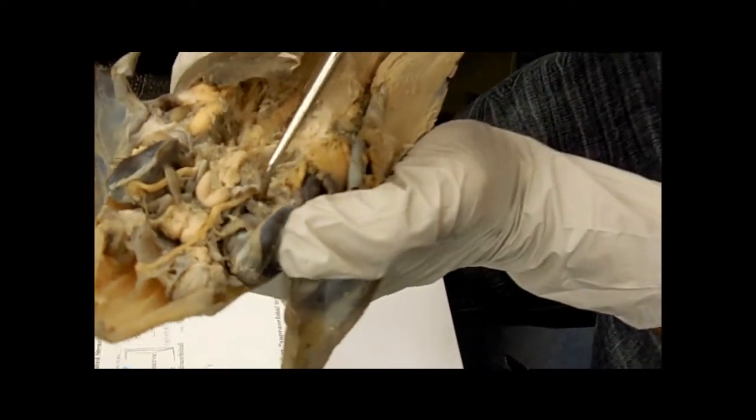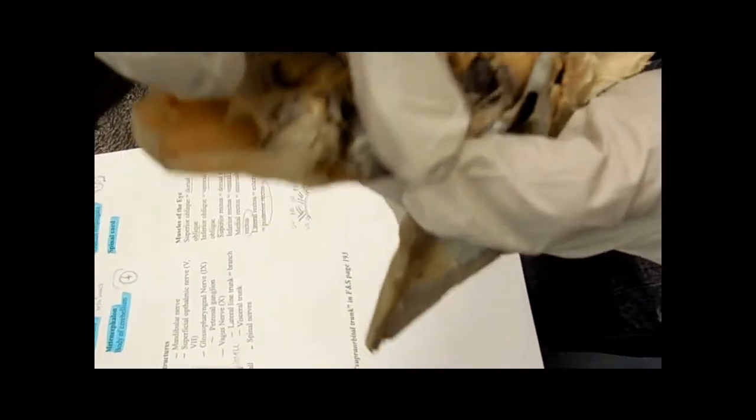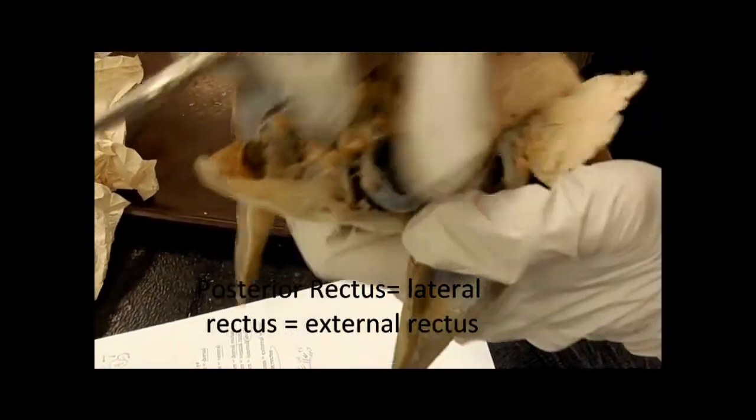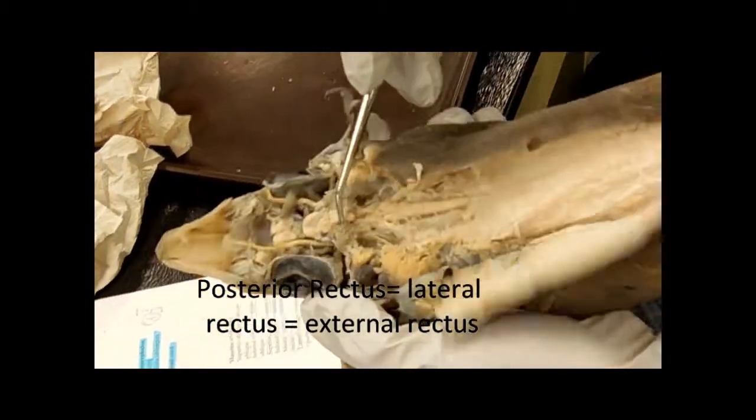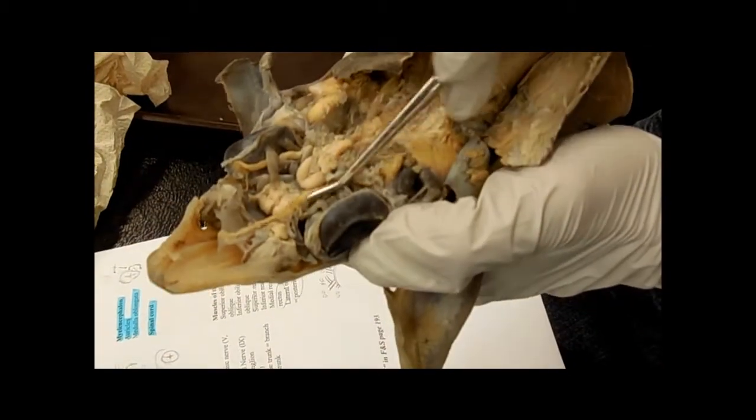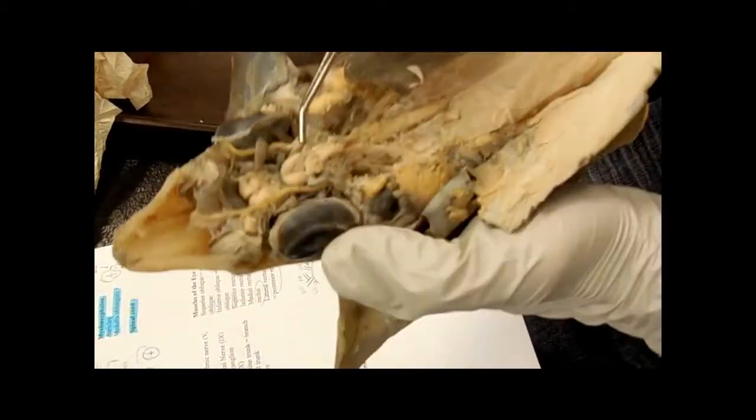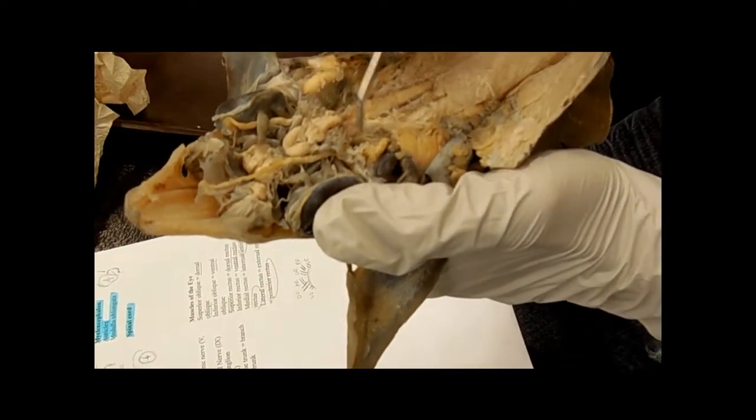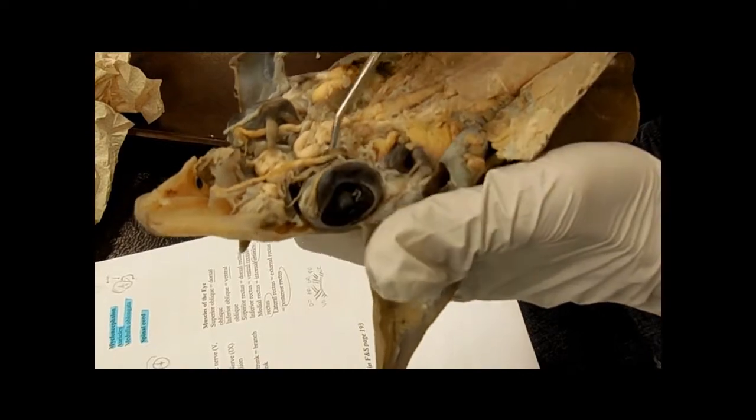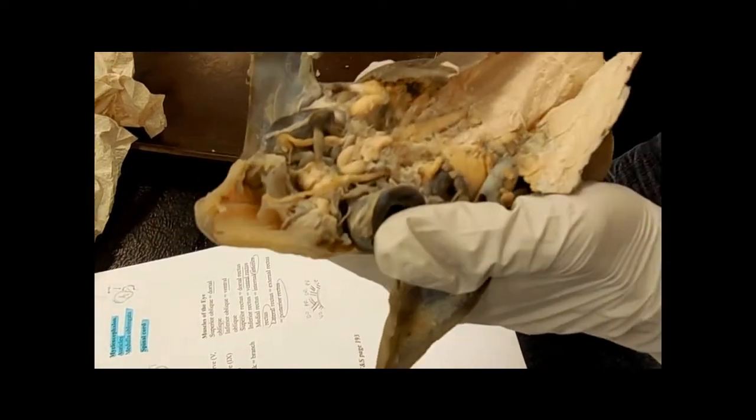Anterior rectus, and then this one's the posterior rectus. So dorsal stuff, ventral stuff, anterior, posterior. So the front ones are the obliques, the back ones are the rectus.